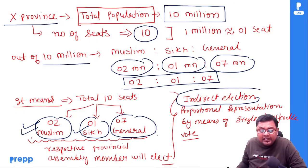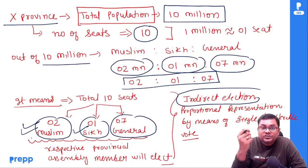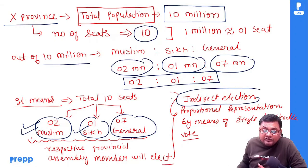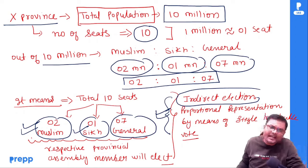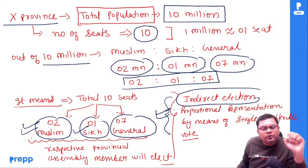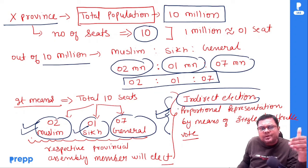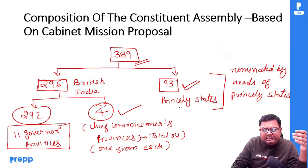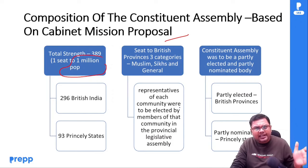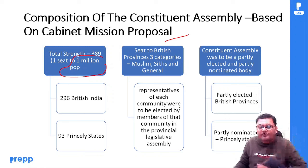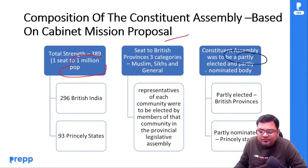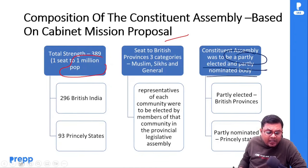यह election जो हुआ था, it was based on proportional representation by means of single transferable vote। इस पे भी questions आते हैं, and यही system है जो हमारे president और vice president के election में use होता है। So assembly का composition और किस तरह से members का election हुआ — it was a partly elected and partly nominated body।